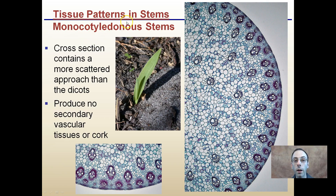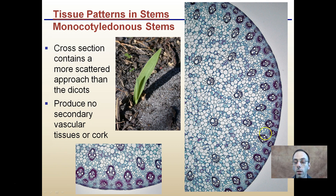In addition to tissue patterns in stems, we have monocotyledonous stems — monocots, as we remember from grass blades or corn plants. Their cross-section contains a more scattered arrangement than in dicots. Monocots produce no secondary vascular tissues or cork. The vascular bundles are more scattered — while there may be slightly more towards the perimeter, they are definitely more scattered compared to dicots.